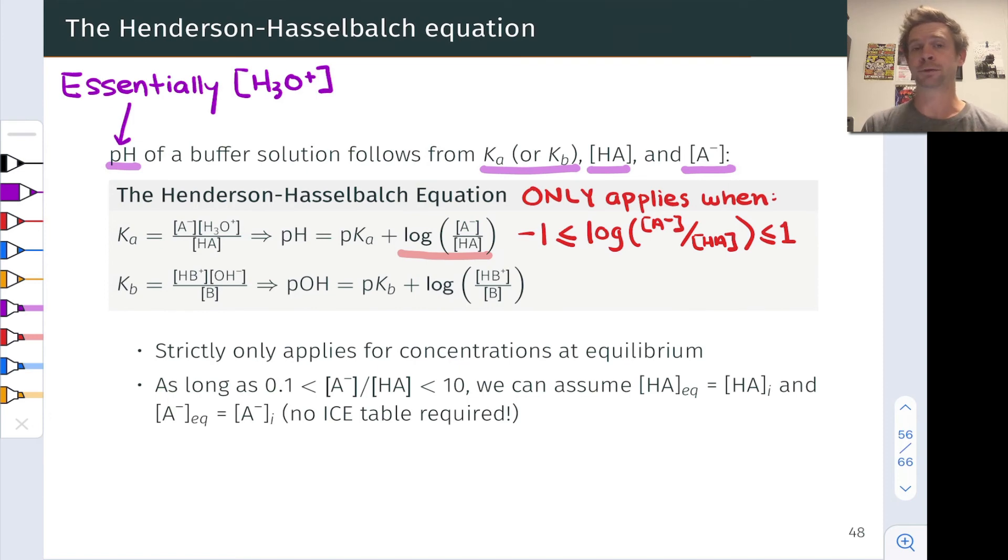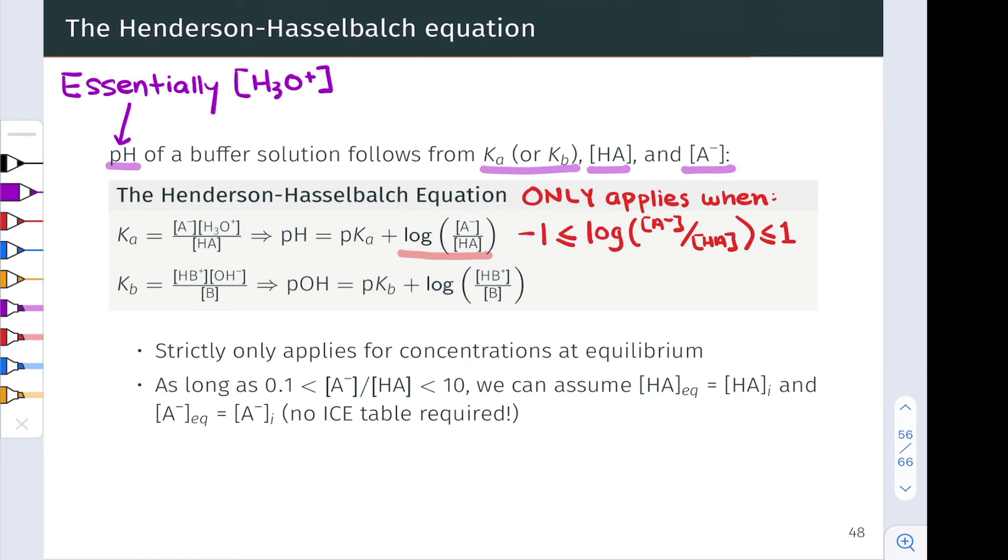but the pH of a buffer system, in order to be a buffer, has to be within one pH unit of the pKa of the acid, or pKb of the weak base in the buffer. And so for the acid situation, negative 1 is less than or equal to the logarithm of the A- concentration divided by the HA concentration, which is less than or equal to 1. Between negative 1 and 1 is that logarithm of the ratio.